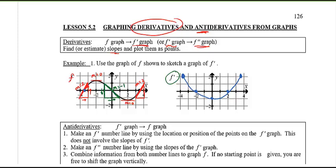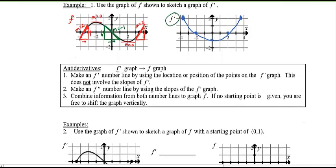That's how we sketch the graph of the derivative: find the slopes at each point, then plot those values on the derivative graph. Now let me give you examples of how to graph anti-derivatives. An anti-derivative just means going the reverse way — if you're given the derivative graph, can you go and graph out the original f? To do this we're going to use the f prime number line, because that allows us to find the position of points.